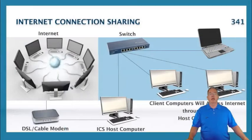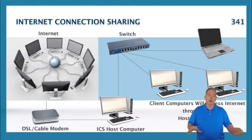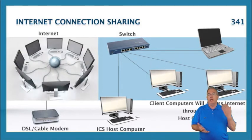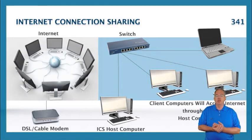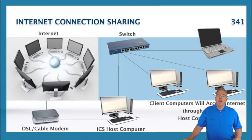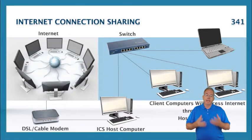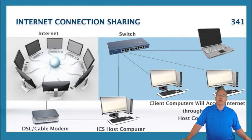What internet connection sharing does is allows you to take one machine and have it act as a gateway. So I'm going to have this ICS host computer over here — it's just a regular computer, could be an XP machine, Vista, Windows 7, 2000, 2008, 2003, whatever. It hooks directly into the DSL or cable modem, gets a public IP address, and then does what's called network address translation.